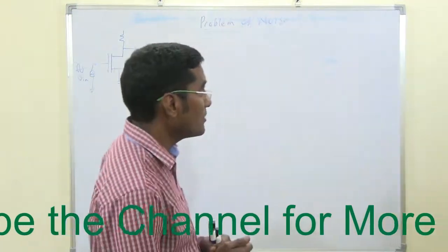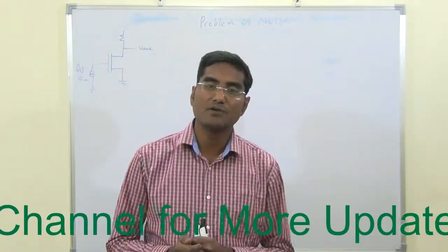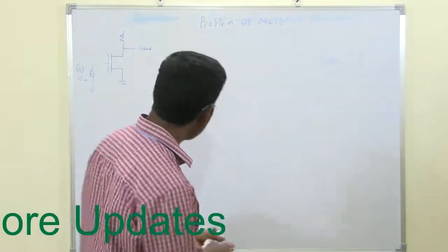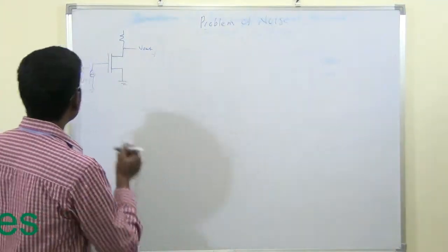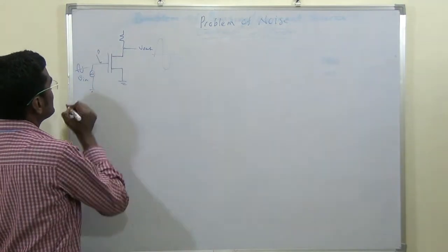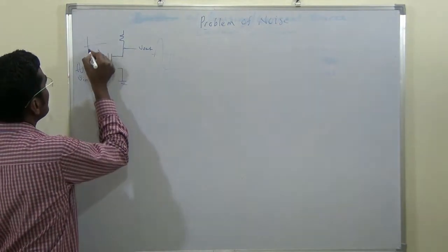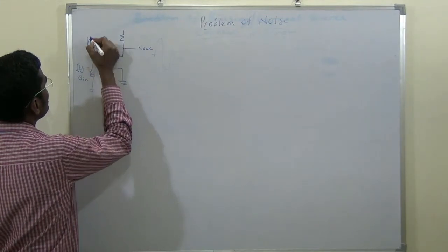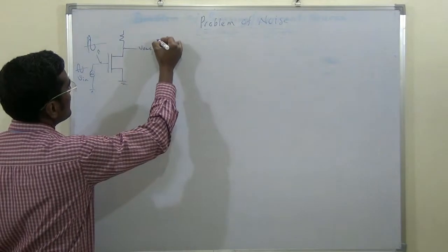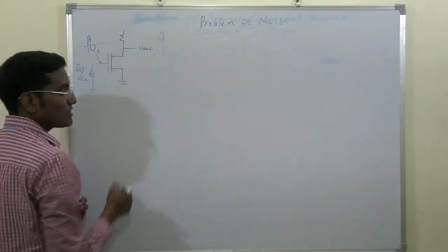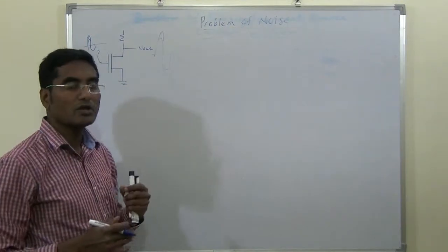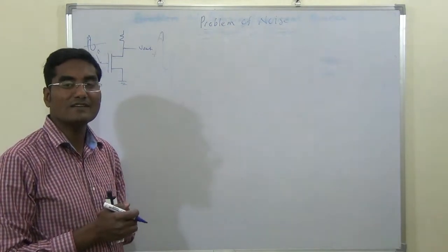The problem in all kinds of amplifiers and all kinds of systems is the noise. For example, if this is the common source amplifier and this is your signal, if some noise is added here, your signal looks like this and your noise is added here — you will get an additive noise and this is nothing but a distorted signal.